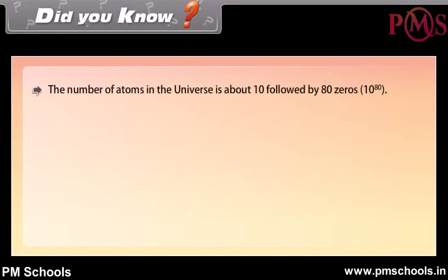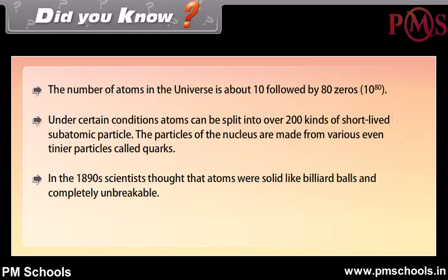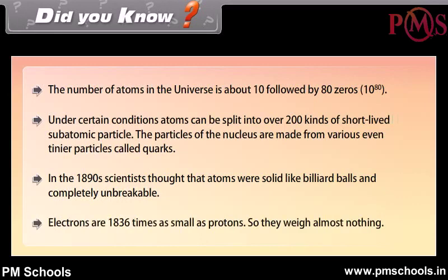Did you know? The number of atoms in the universe is about 10 followed by 80 zeros. Under certain conditions, atoms can be split into over 200 kinds of short-lived sub-atomic particles. The particles of the nucleus are made from even tinier particles called quarks. In the 1890s, scientists thought that atoms were solid like billiard balls and completely unbreakable. Electrons are 1836 times smaller than protons, so they weigh almost nothing.